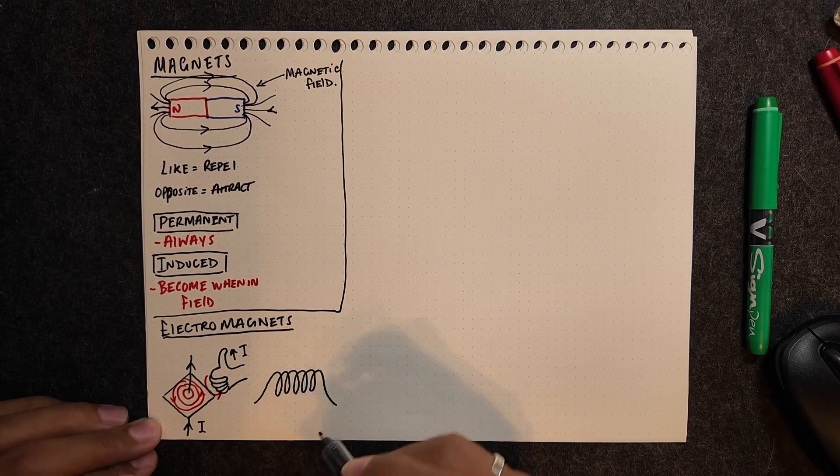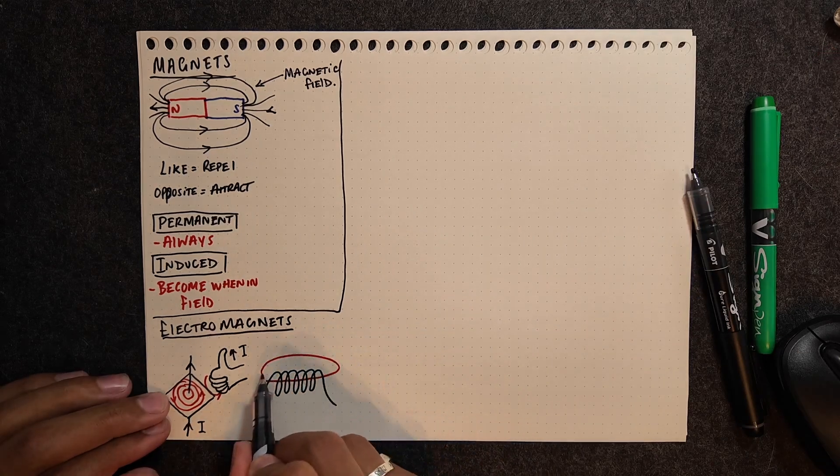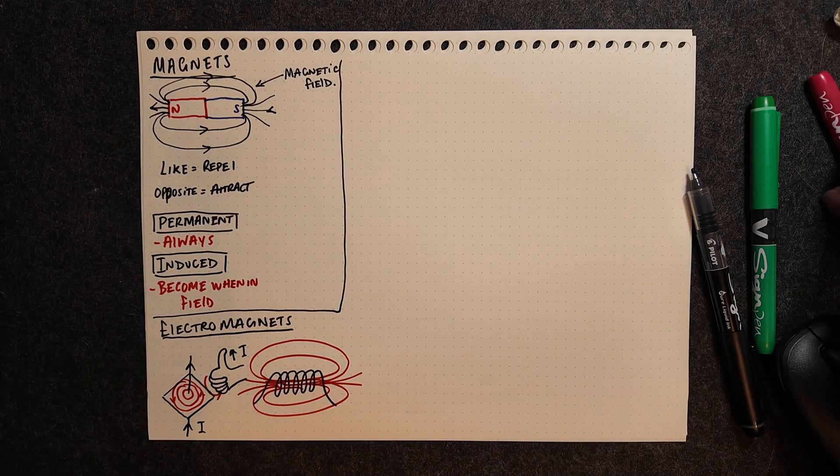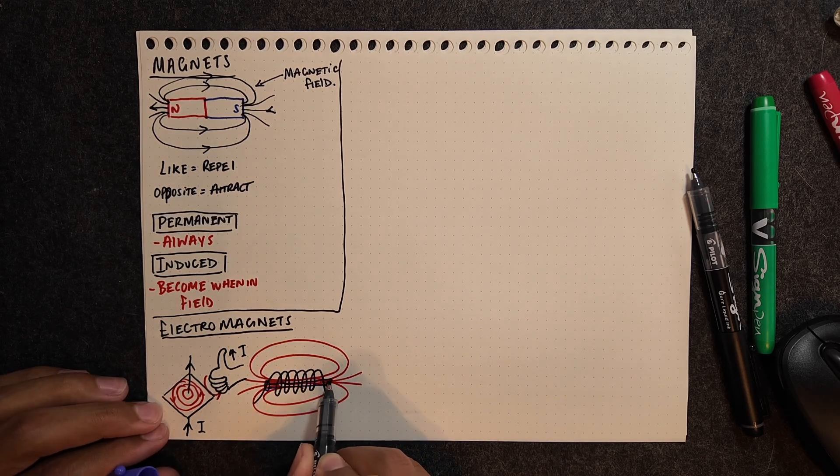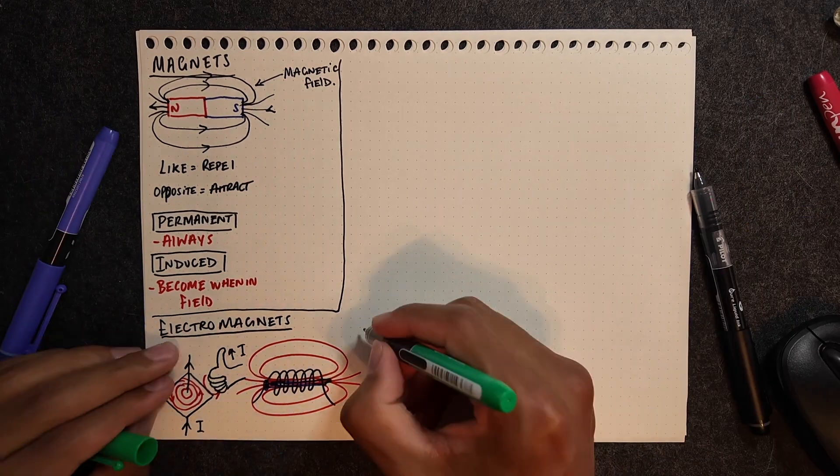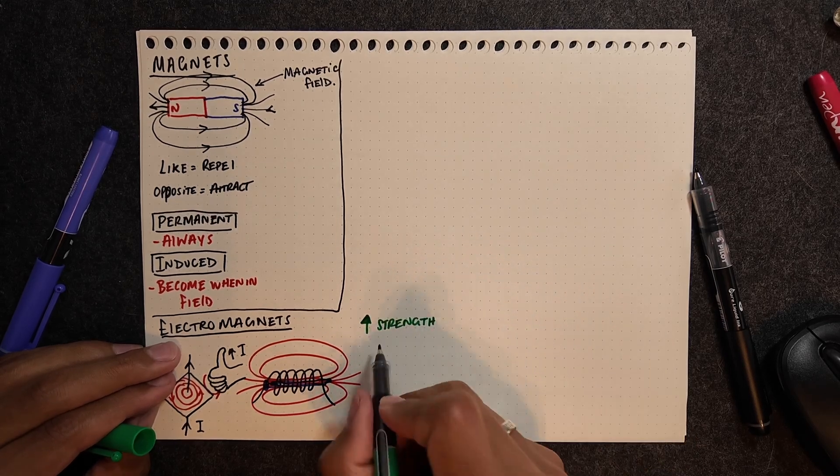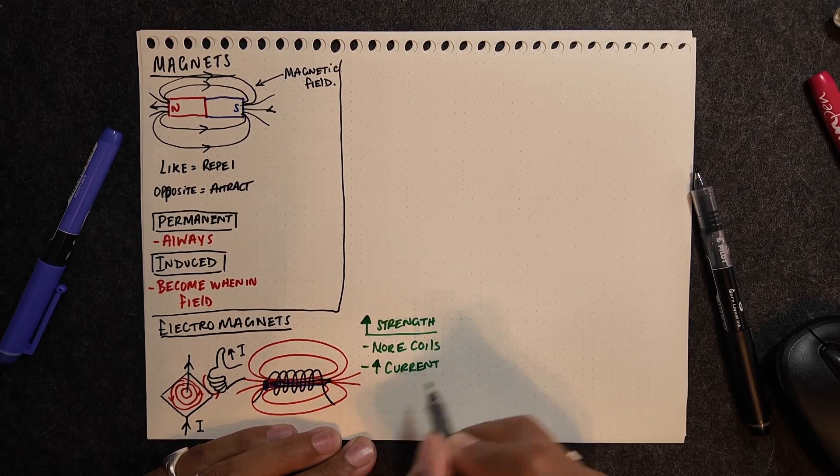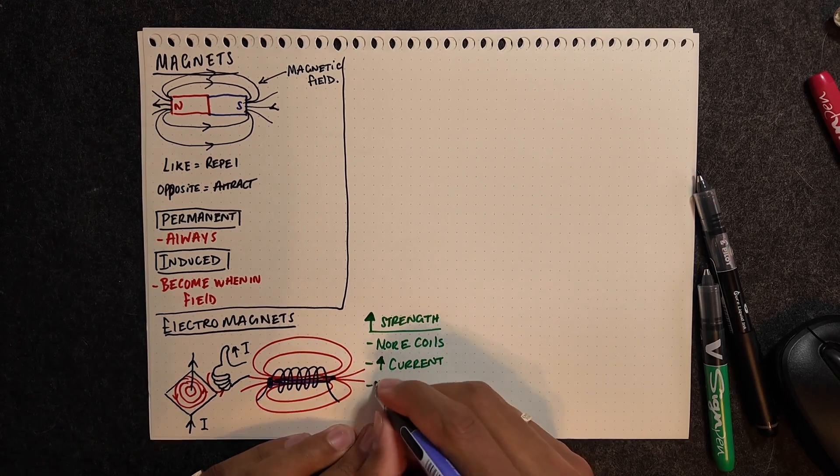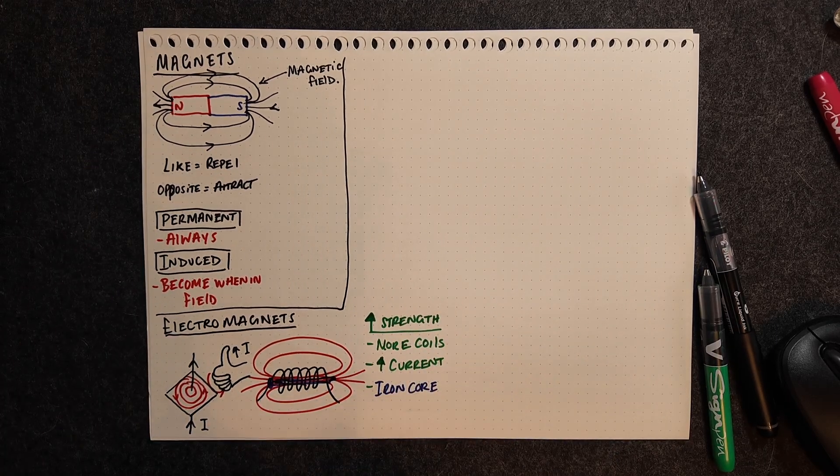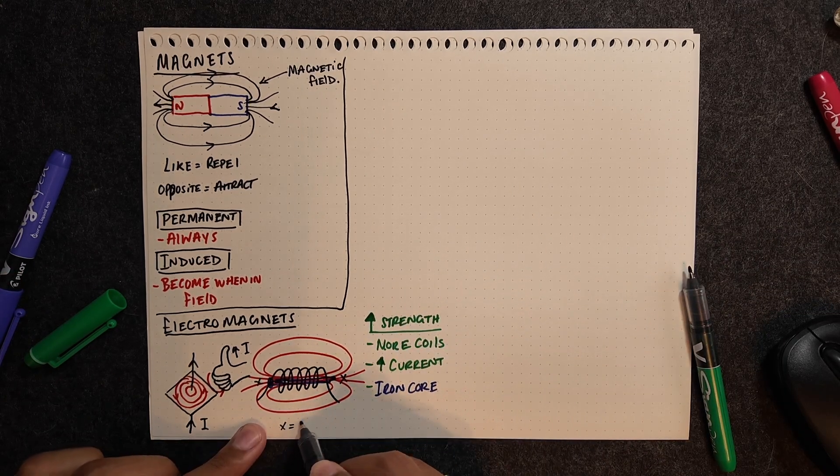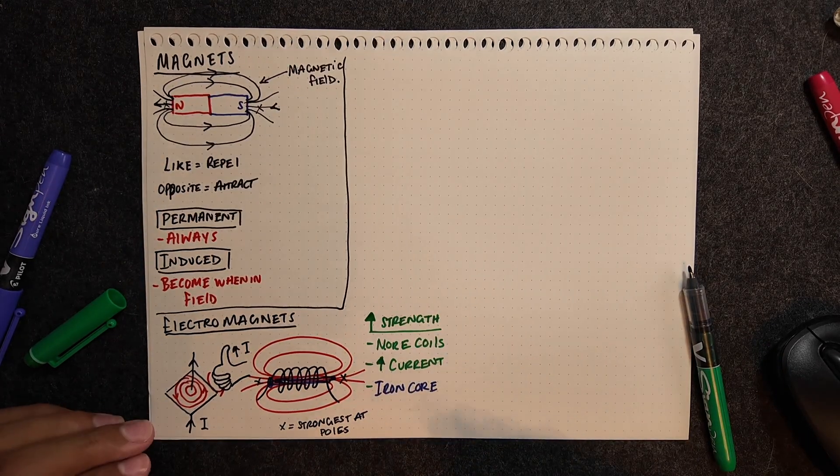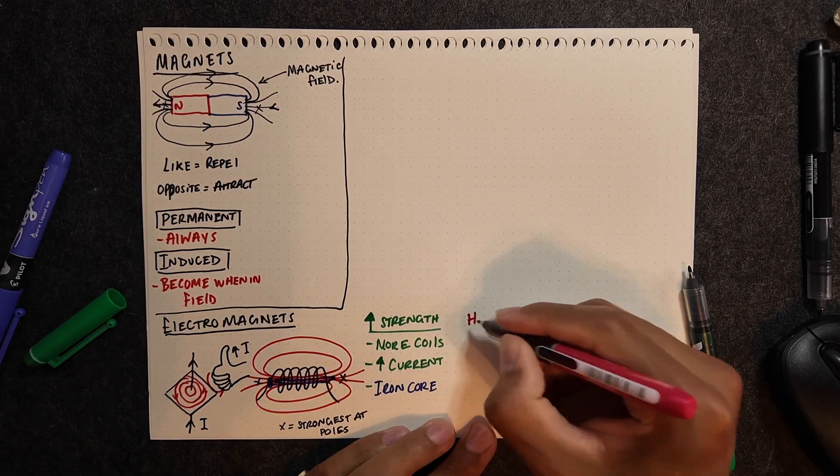Now if we coil the wire into a coil, we get a solenoid. If we pass a current through that wire coiled round, we get a magnetic field around it, but that magnetic field is exactly the same as a permanent bar magnet. In order to make these stronger, we can increase the number of turns on the coils, increase the current, and place an iron core in there as well. It's always going to have the strongest magnetic field where the lines are closest together, so it's strongest at the poles.